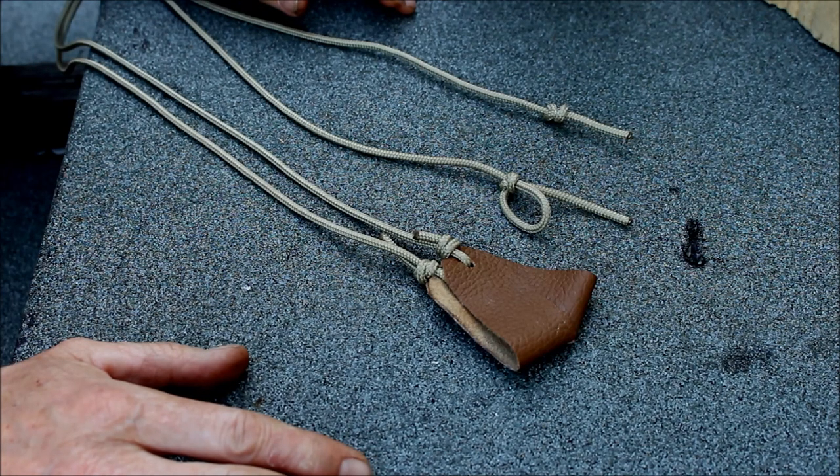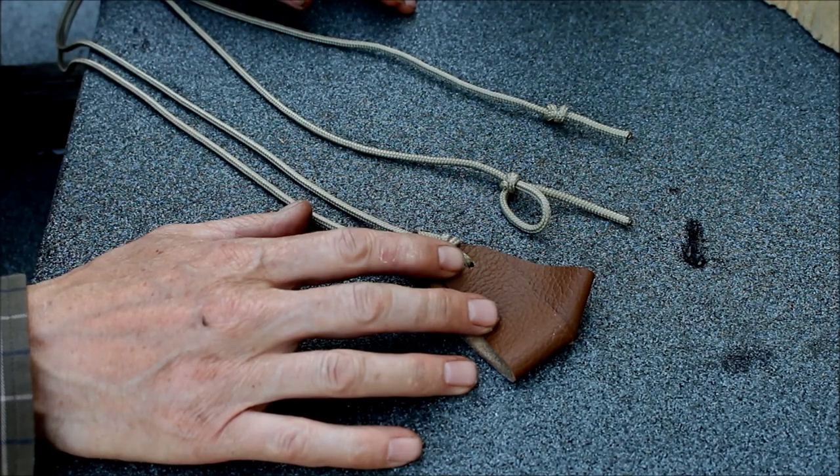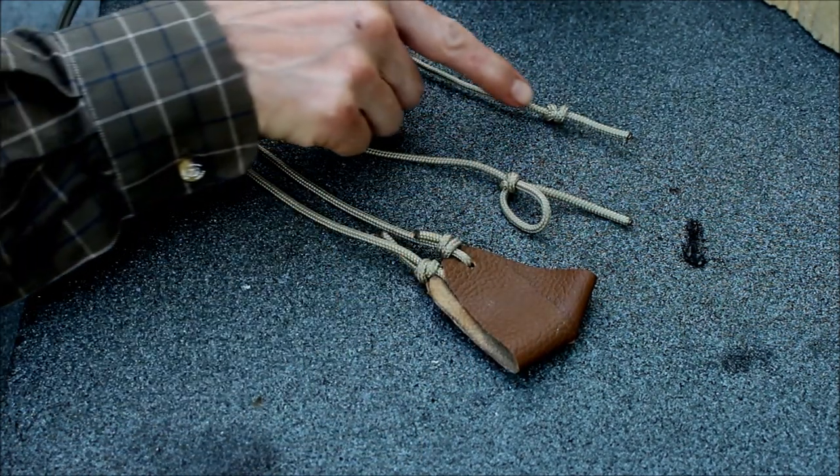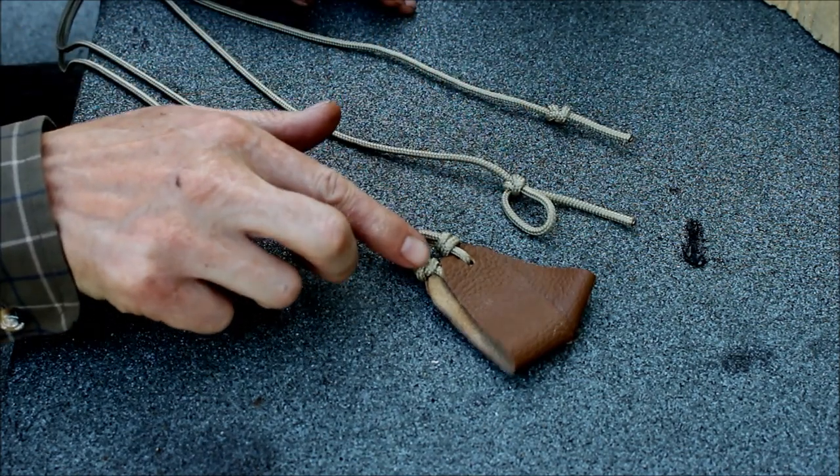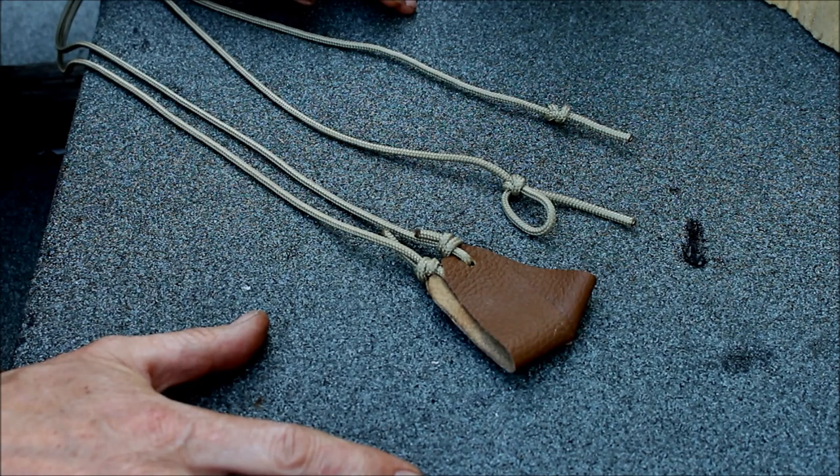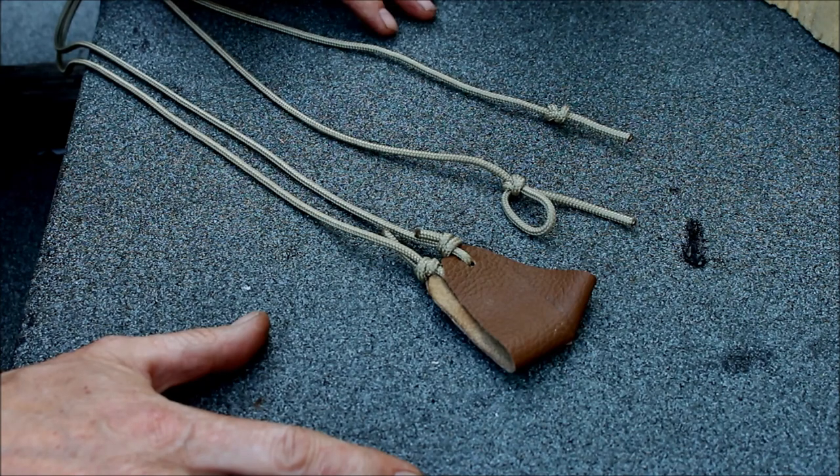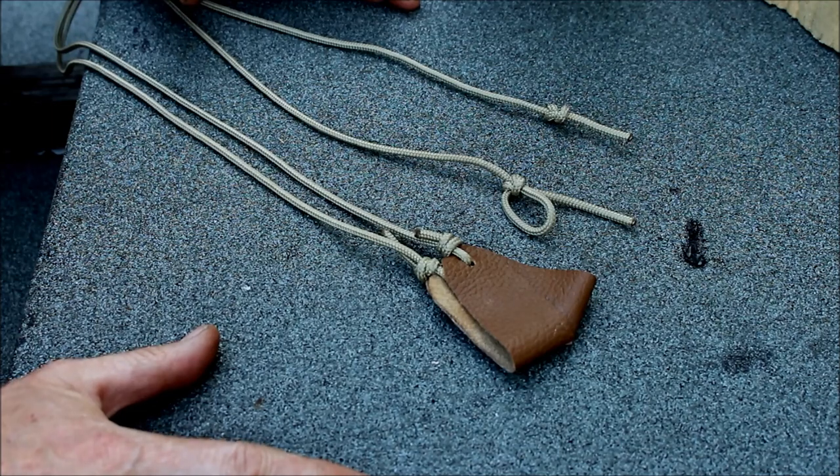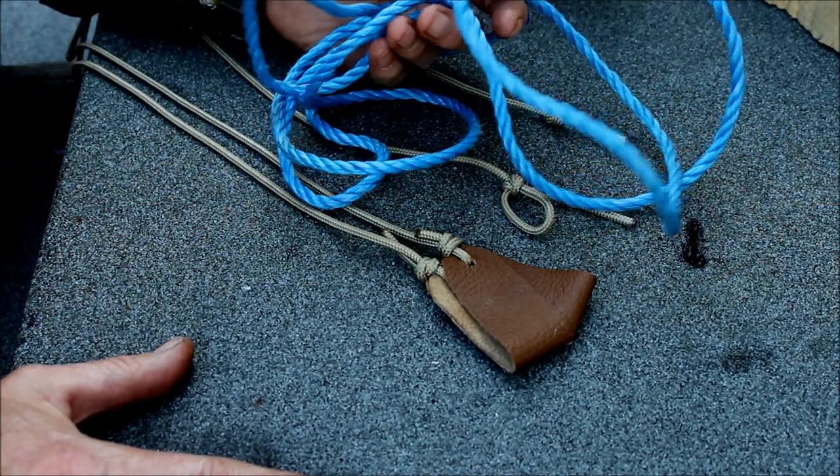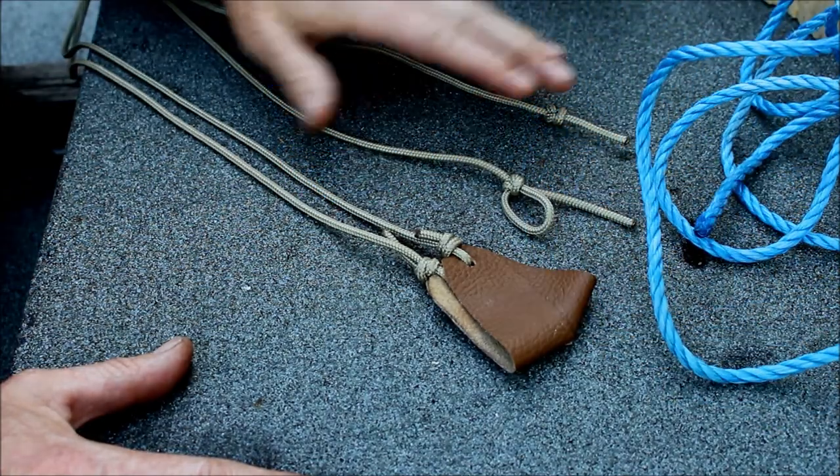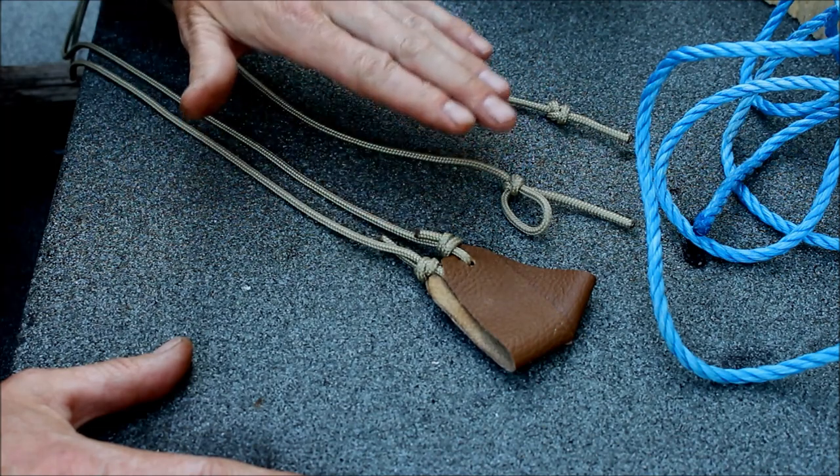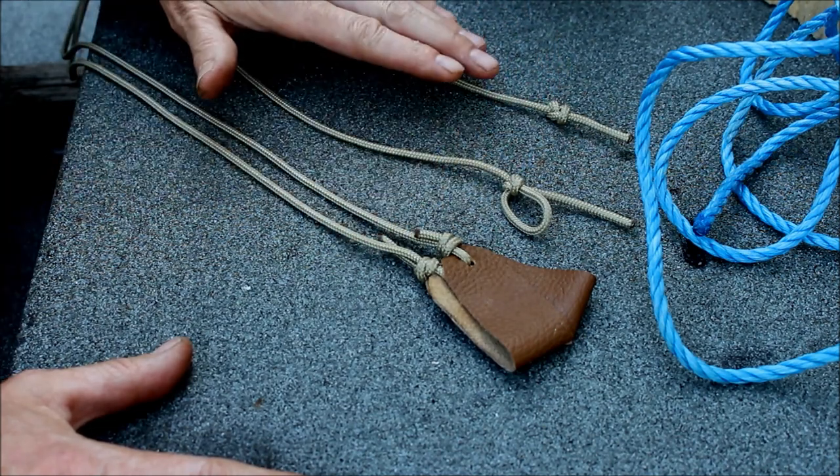So in my previous video I made the shepherd's sling and I tested it out and it worked splendidly. In the making of it I used three different knots: the figure of eight, the bowline, and the fisherman's knot. But in the construction I didn't really demonstrate those knots, so I thought I'd use just a couple of minutes to go through those knots. These three knots are a brilliant three knots to know if you don't know many knots.